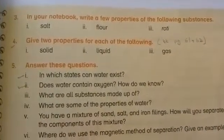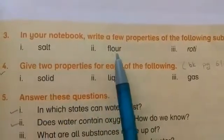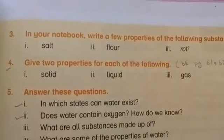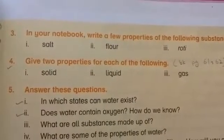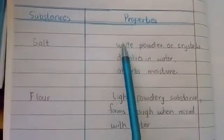In your notebook, write a few properties of the following substances: number 1 salt, 2 flour, 3 roti. So you have to draw a column like this: substances and their properties.